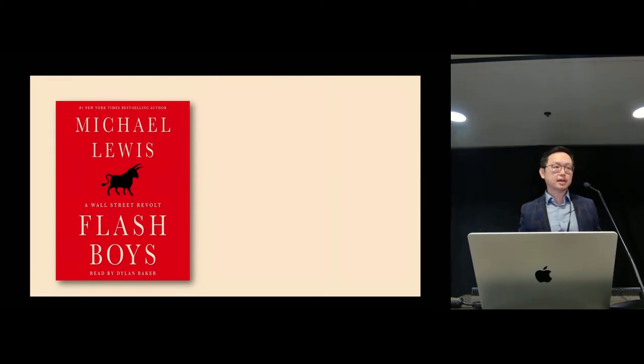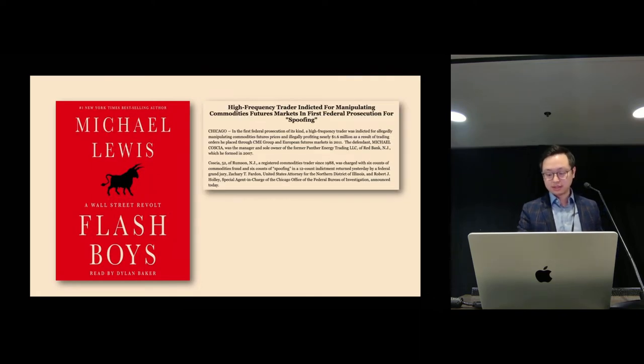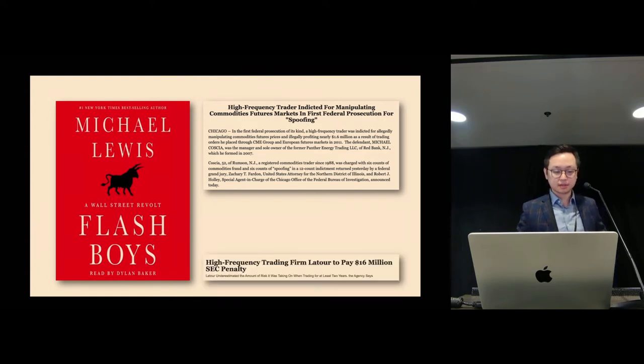Many of you might have heard of the book Flash Boys from Michael Lewis. In traditional finance, there are plethora of market manipulation techniques which are typically regulated by regulators. Regulators like the SEC in the US typically do two types of actions: they come up with rules and enforce them if someone violates the policies. In this particular example, we've seen a company paying a 60 million dollar penalty to the SEC.